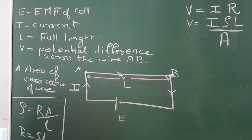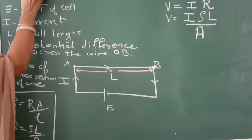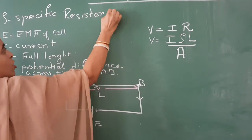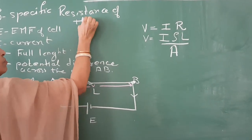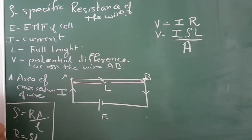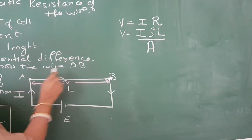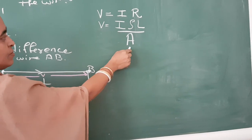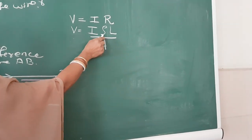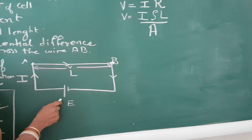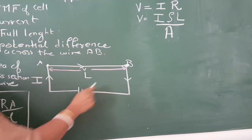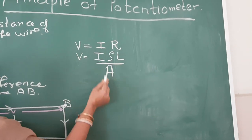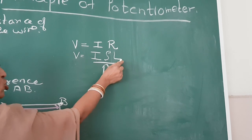Here, A is the area of cross-section, L is the length, and rho is the specific resistance of the wire. Now, since the wire is the same and we are not changing it, A is constant and rho is constant. Since we are not changing the EMF of the cell, the current I is also the same. So this combined term is constant.